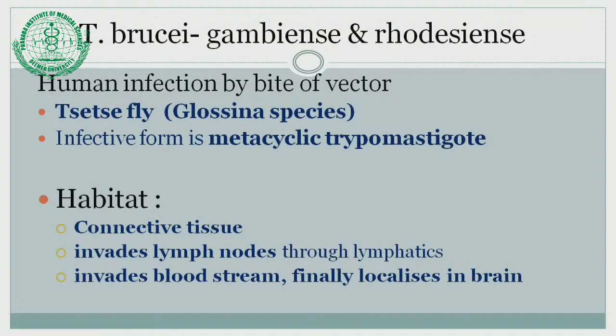The disease caused by this parasite is known as sleeping sickness — more correctly East African sleeping sickness and West African sleeping sickness. The second group, American trypanosomes, includes Trypanosoma cruzi. This is a vector-borne disease. The tsetse fly — genus Glossina — is the vector, with different species for East and West African trypanosomes. The infective form injected by the tsetse fly into human beings is the metacyclic trypomastigote. In the human body, the habitat of the parasite is connective tissue; it invades the lymph nodes through lymphatics and then the bloodstream, finally localizing in the brain.